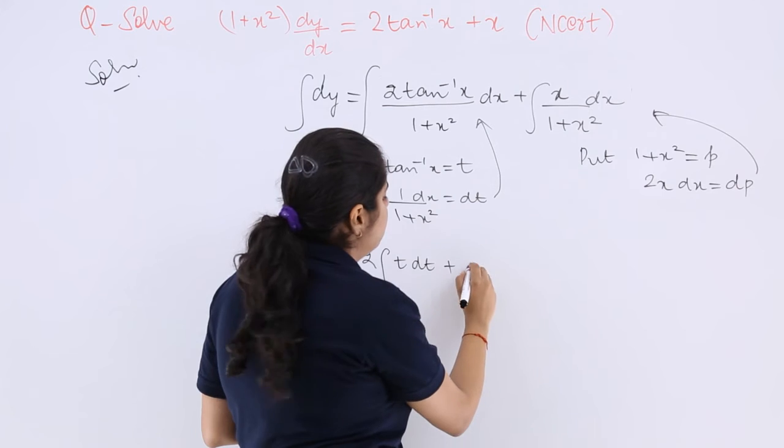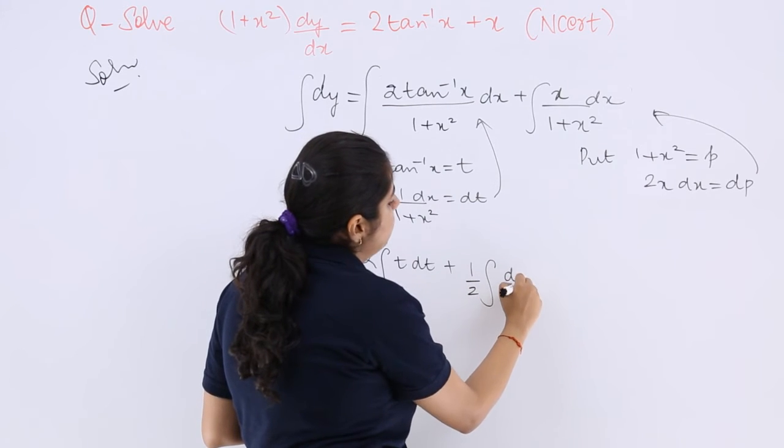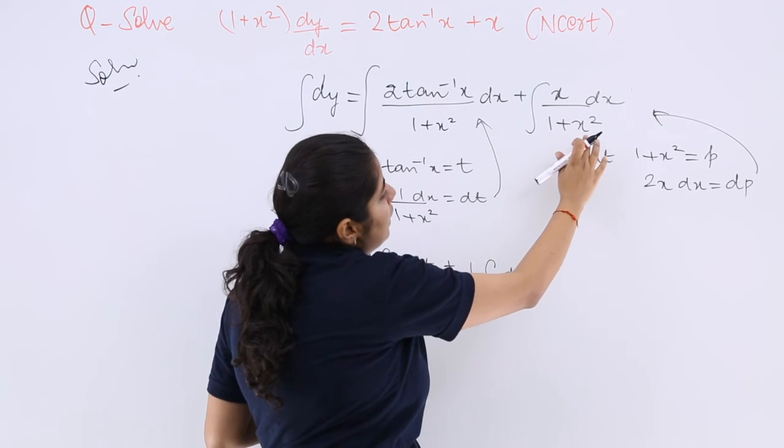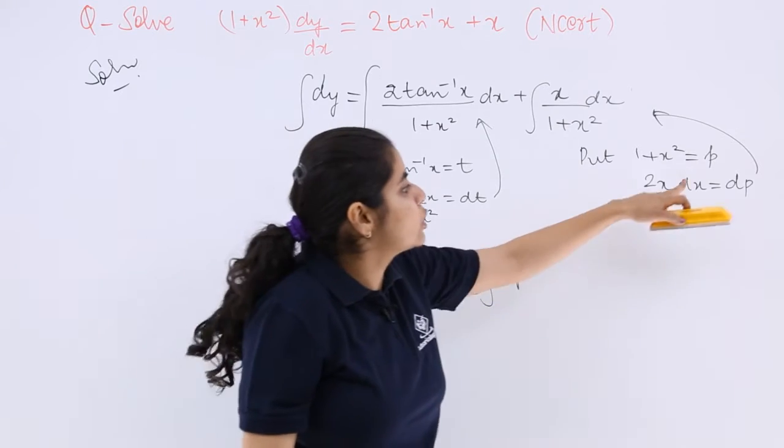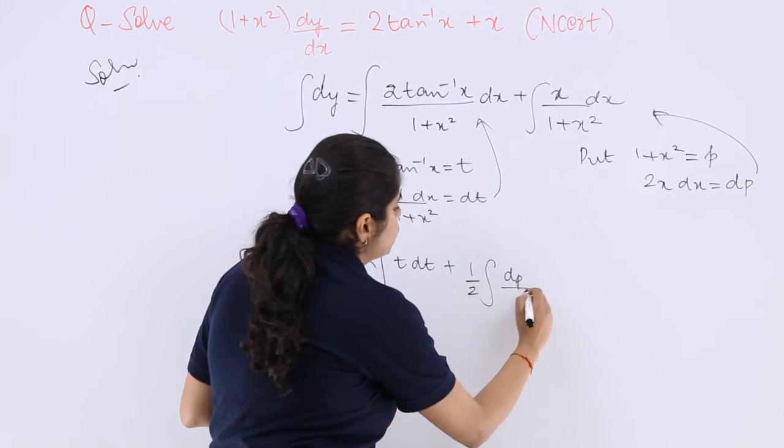Plus integration is there, x dx is what? It is dp/2. So that means (1/2)dp and 1+x² is p. So this should be p.